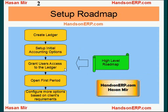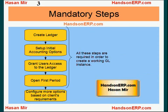Once all that is done, you can configure more options based on client requirements. This last box represents not just one or two options but tons of options available in general ledger that may differ drastically from client to client — for example, one client might want to use budgets, another mass allocation, another consolidation. The first four boxes are mandatory steps, and most of these options cannot be changed later, so whatever you choose must be well thought out.